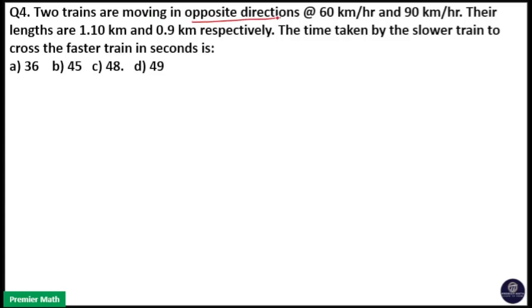Two trains are moving in opposite directions at 60 km per hour and 90 km per hour. Their lengths are 1.1 km and 0.9 km respectively. The time taken by the slower train to cross the faster train in seconds is...